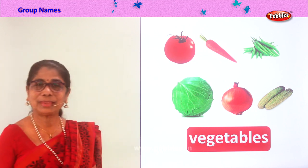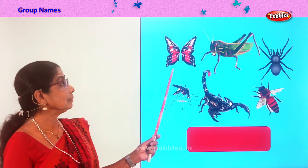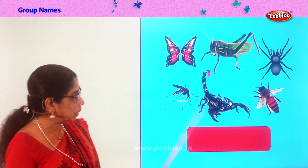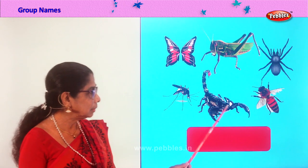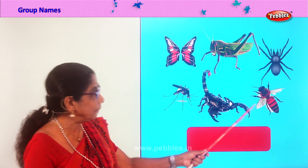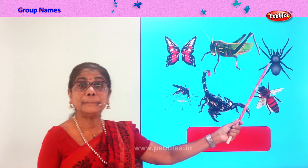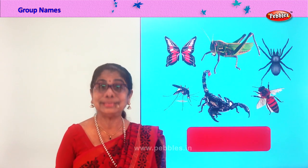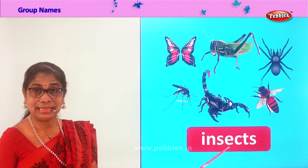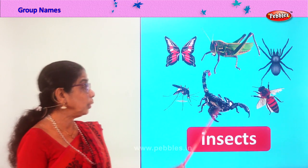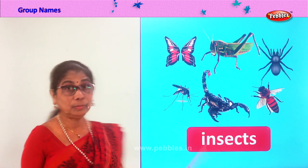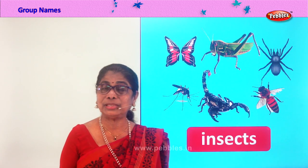Let's look at another group and find the group name. You have a butterfly, grasshopper, fly, mosquito, scorpion, bee, and spider. What do you call all of them together? Insects! They are called insects: I-N-S-E-C-T-S. Poisonous insects, the very bad mosquito that gives you sickness, and the butterfly — the most beautiful insect. Group name for this is insects.